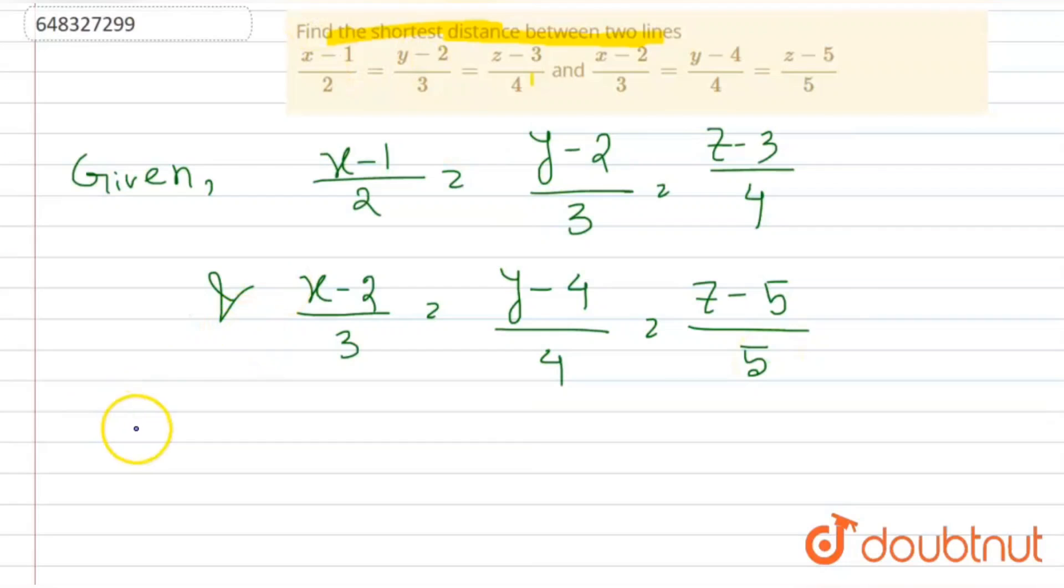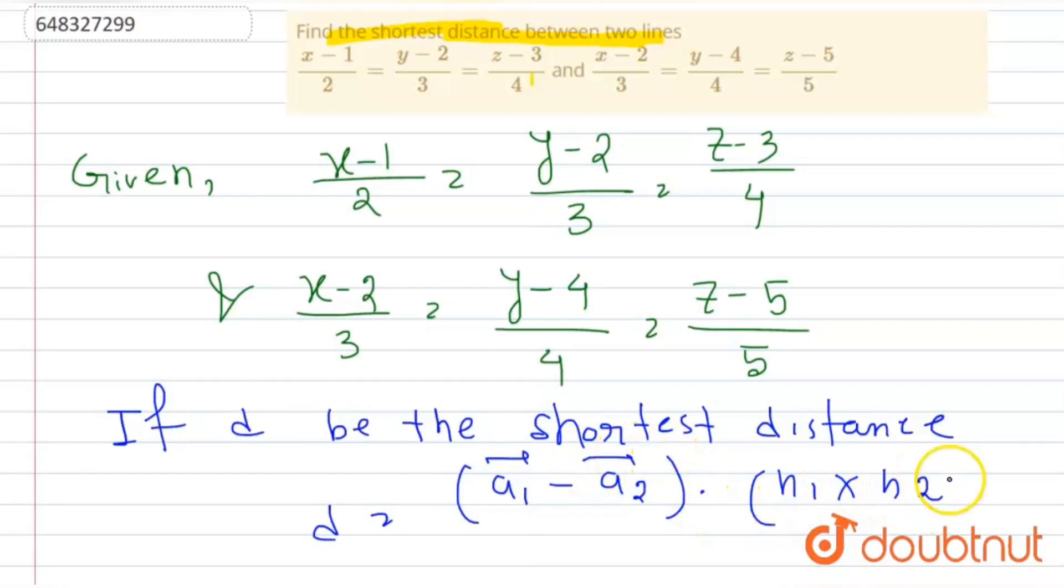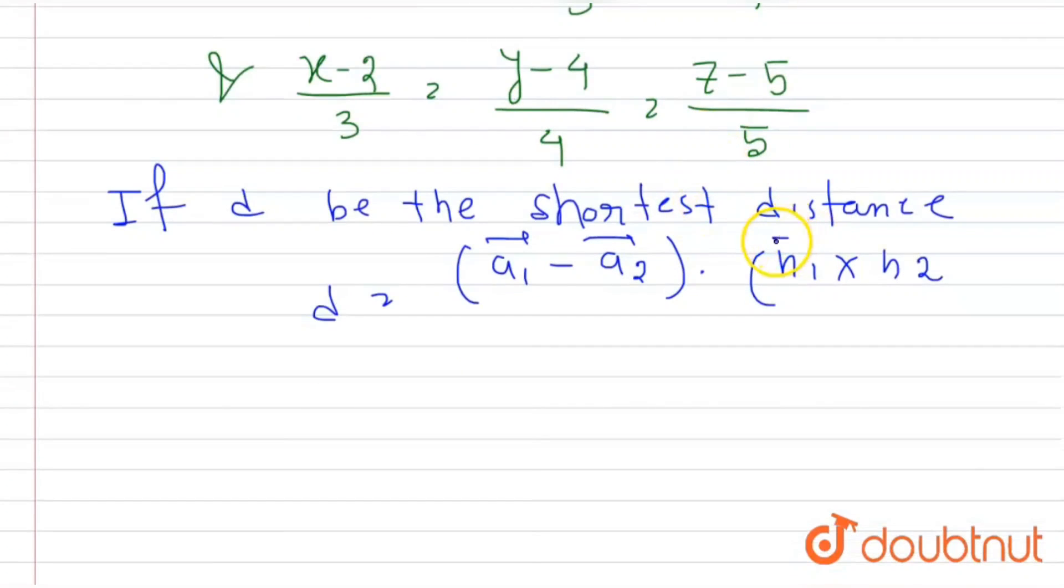Now to find the shortest distance, if d be the shortest distance, so the formula will be d equals vector a minus vector b dot n1 cross n2 by mod n1 into n2.